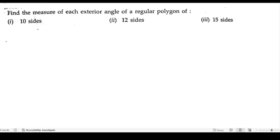Find the measure of each exterior angle of a regular polygon. First, with 10 sides. We need to find out the exterior angle. Here we have a regular polygon, that means all the sides are equal or all the angles are equal.